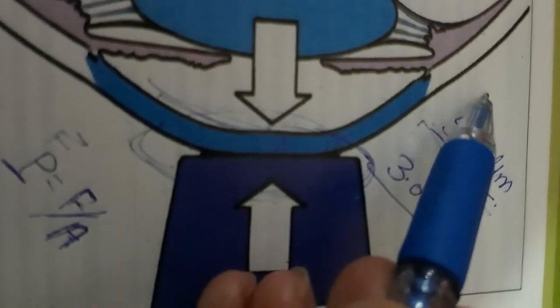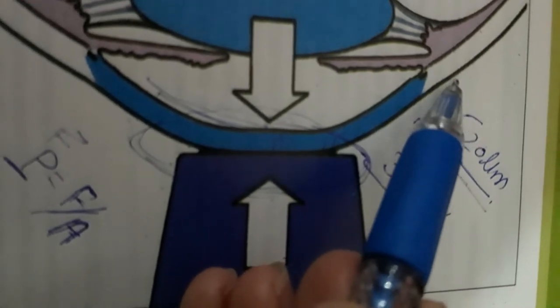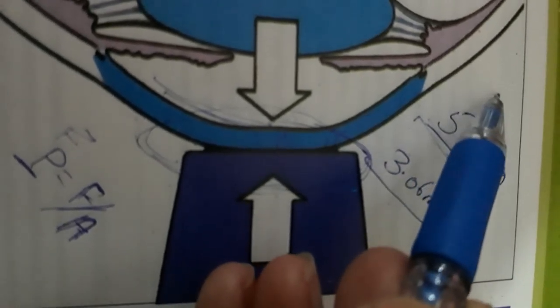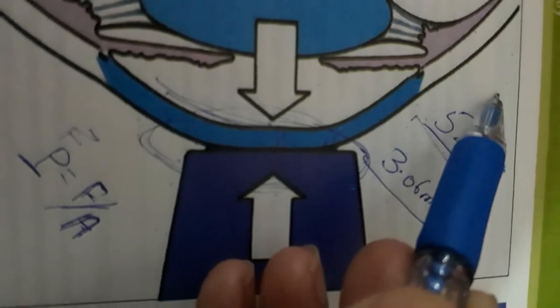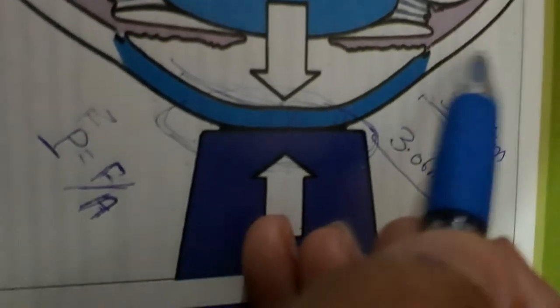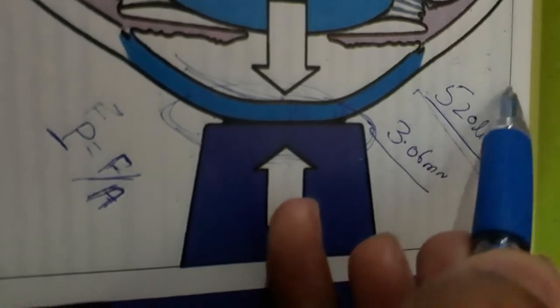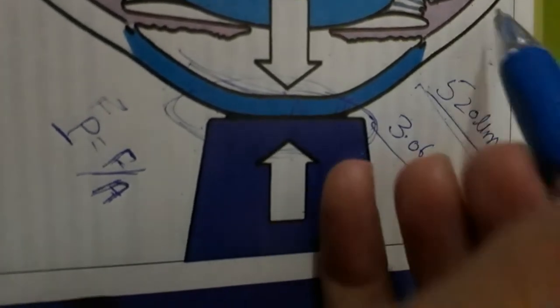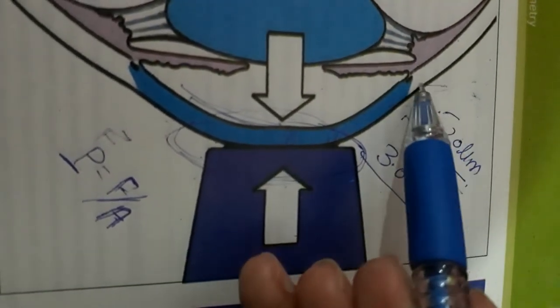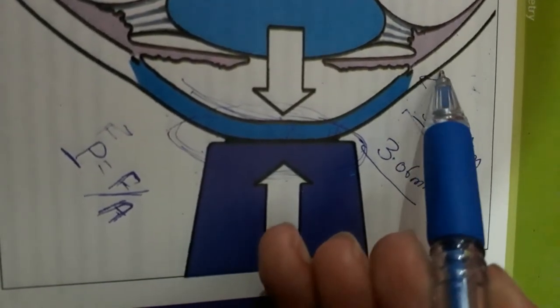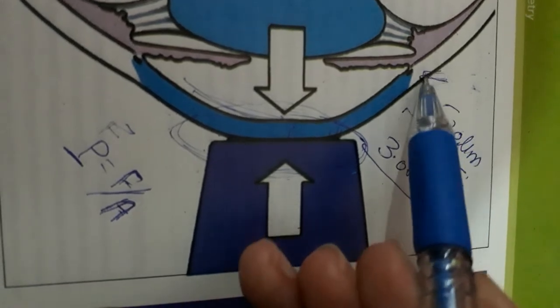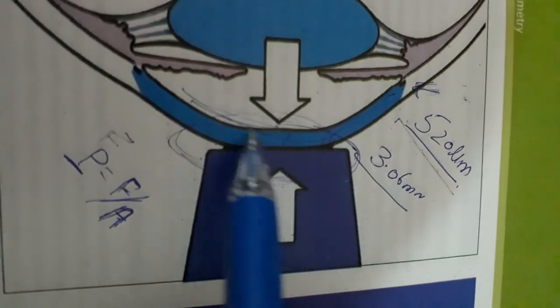Pressure on the globe or restricted extraocular muscles may give rise to an anomaly in IOP reading. This is due to pressure exerted on the globe, which will change the shape of the cornea.